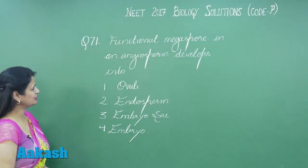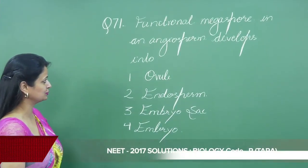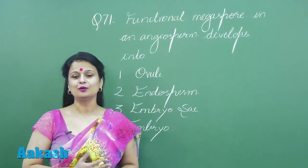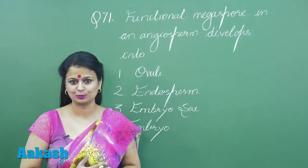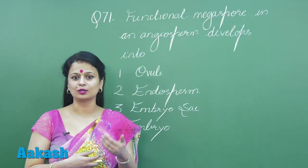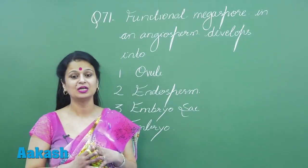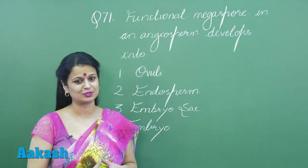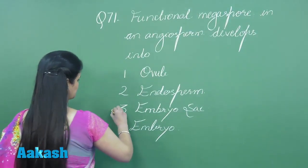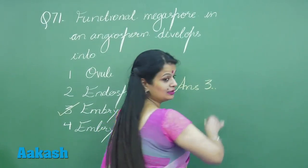Question number 71: The functional megaspore in an angiosperm develops into what? The megaspore is a haploid cell that represents the gametophytic generation. It undergoes mitotic division, resulting in the formation of the female gametophyte, which is also known as the embryo sac. So the right option for this question is option number three.